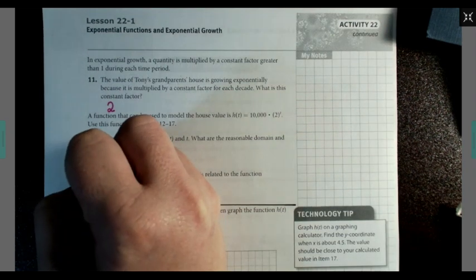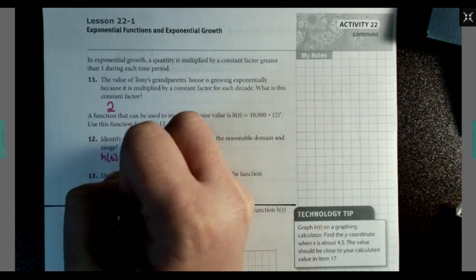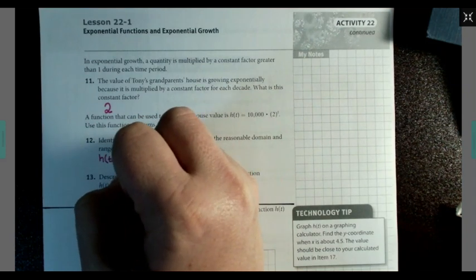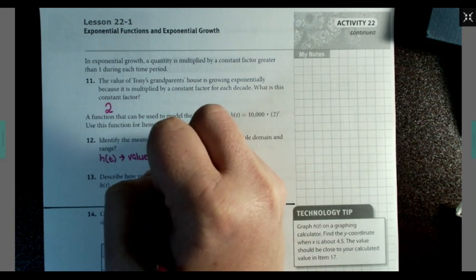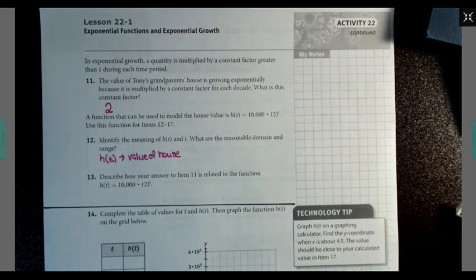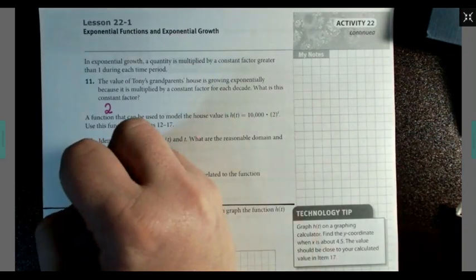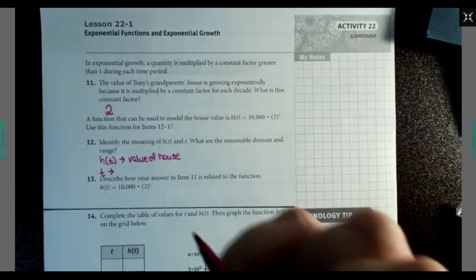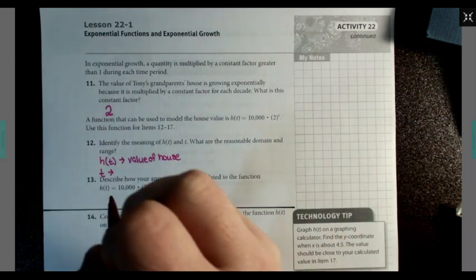h(t) is the value of the house. t is not the number of years. It's the number of decades.